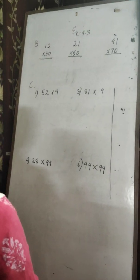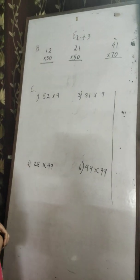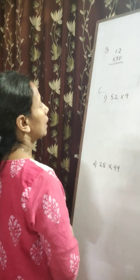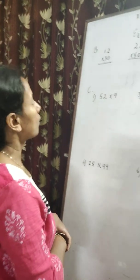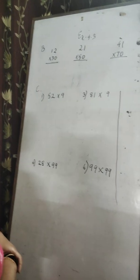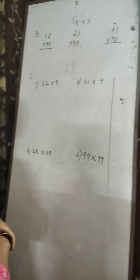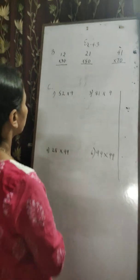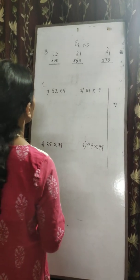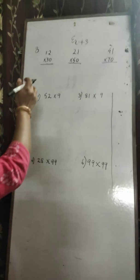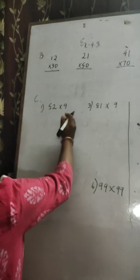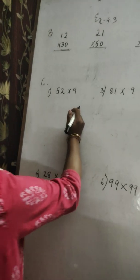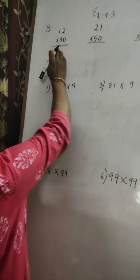Dear students of Class 3, today I am going to take the first class on multiplication, so get ready with your textbook. Along with the textbook, take out a rough copy where you can practice what I'm going to write on the whiteboard. Take out Exercise 4.3, that is page 54.